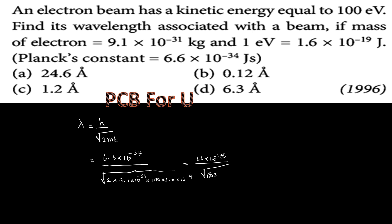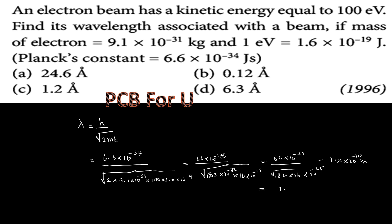Computing the numerator: 6.6 × 10⁻³⁴, divided by the square root of 2 × 9.1 × 10⁻³¹ × 1.6 × 10⁻¹⁷. Simplifying the exponents under the square root gives 10⁻⁴⁸, so the square root gives 10⁻²⁴, and combining terms yields the final wavelength value of approximately 1.0 × 10⁻¹⁰ meters.